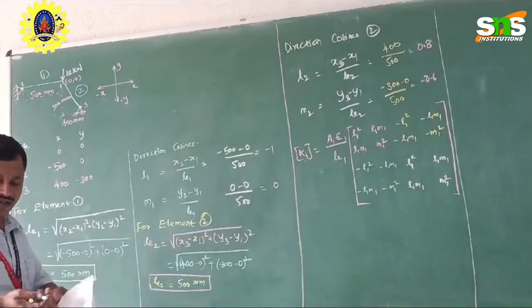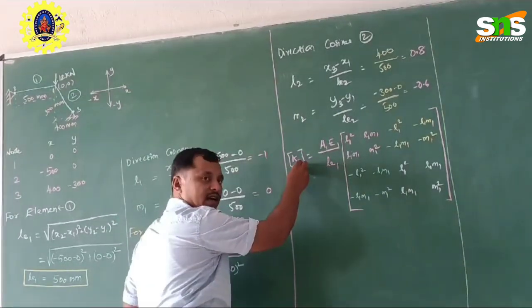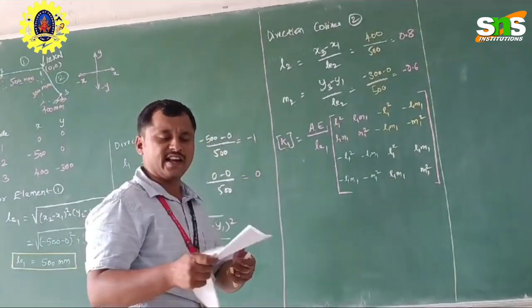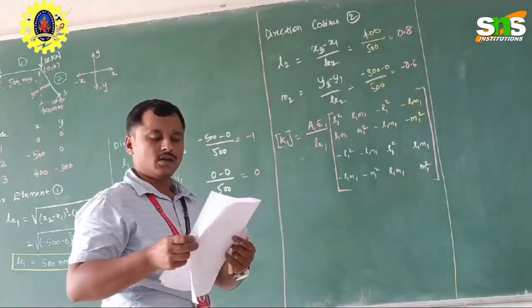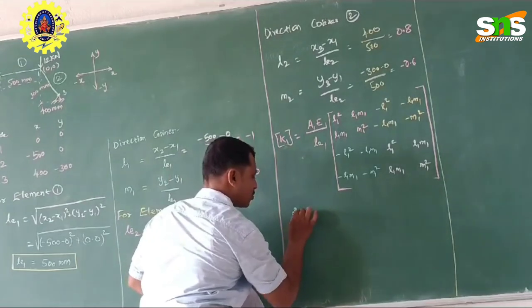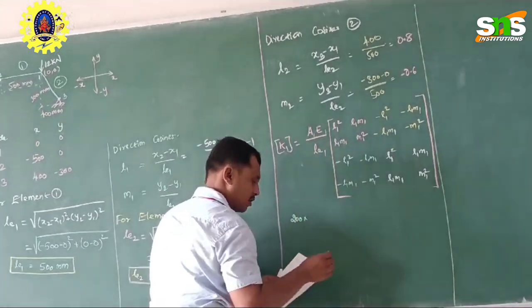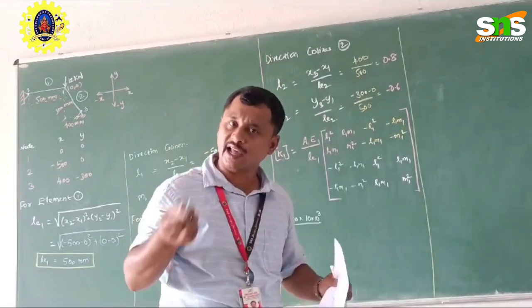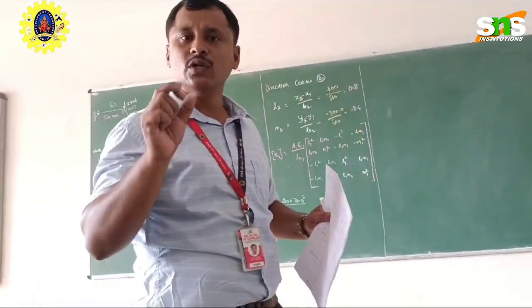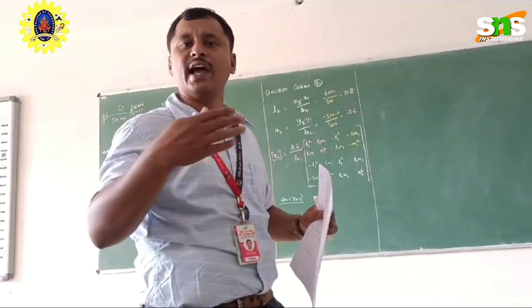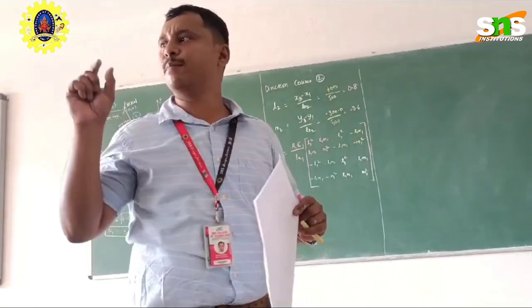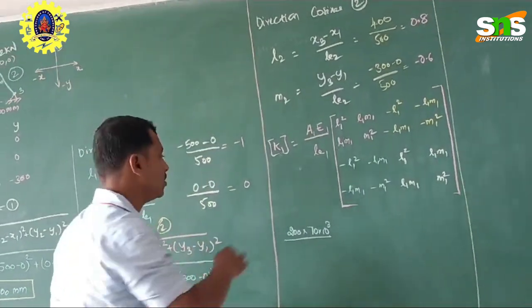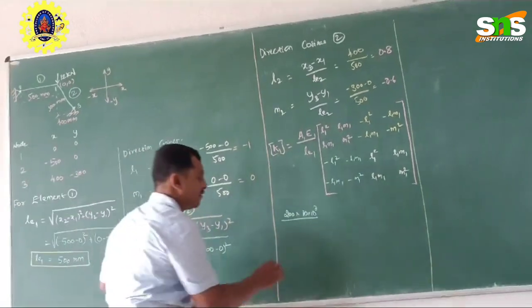This is the truss element and this is the stiffness matrix for this element. Now what you have to do is substitute all the values. For finding the stiffness matrix of element number 1, you have to substitute all the values. The area of the element given in the question is 200 mm squared. The Young's modulus is also given — it is 70 GPa, that is 70 into 10 power 3 N per mm squared. In this problem all the values are in terms of millimetres, so you have to convert all the values to millimetres — unit conversion is very important while solving this problem. The length of element number 1 we have already found out; it is 500 mm.